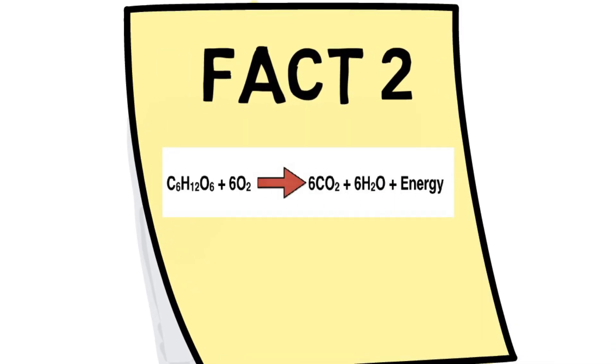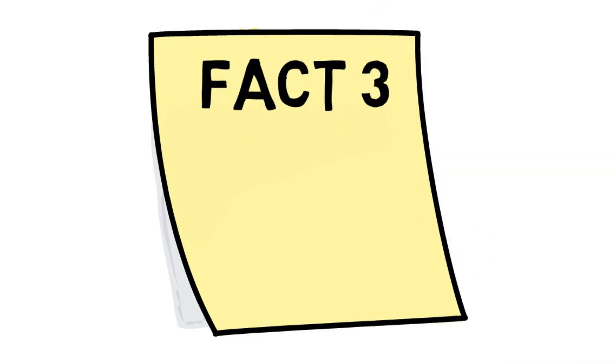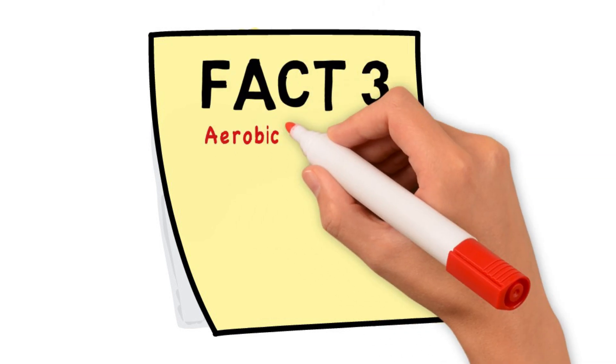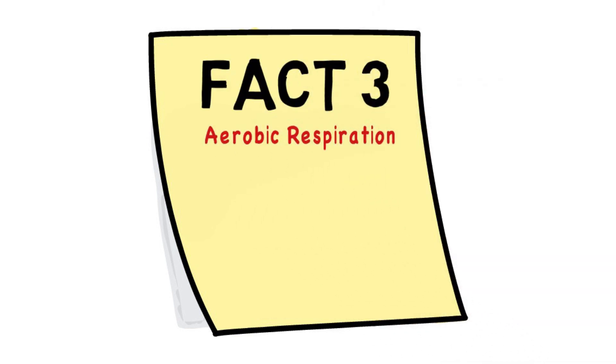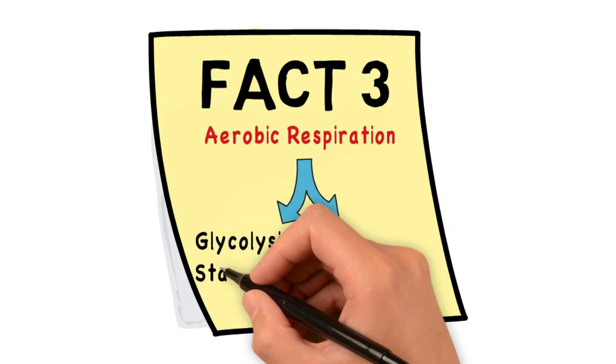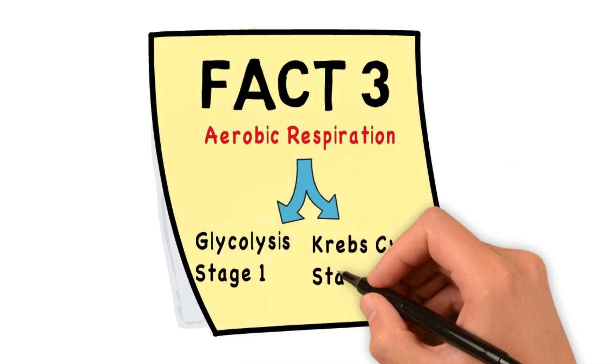balanced perfectly. Fact three: aerobic respiration is a two-stage process — it's made up of glycolysis, stage one, and Krebs cycle, stage two.